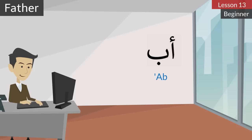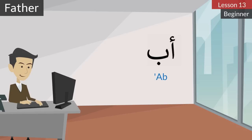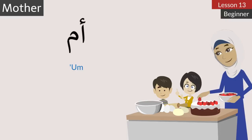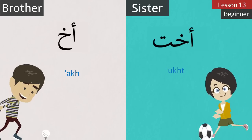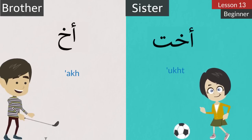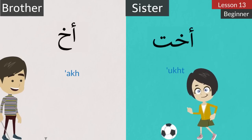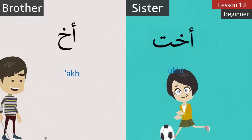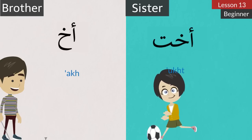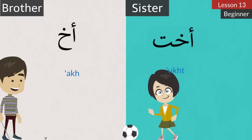Ab — Father. Ab — Father. Um — Mother. Um. Our next one. Ach — Brother. Ucht — Sister. Let's repeat. Ach, Ucht.